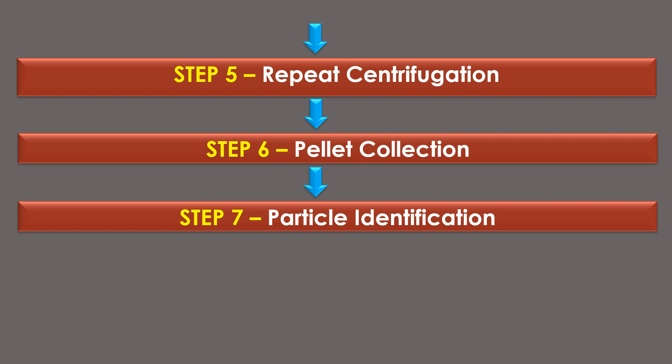Step 7 is particle identification: once all the desired separations have been performed, the collected pellets and supernatant fractions can be further analyzed. The separated particles can be identified through various methods, such as biochemical assays, microscopy, or specific staining techniques that target unique indicators or markers of the specific particles of interest.